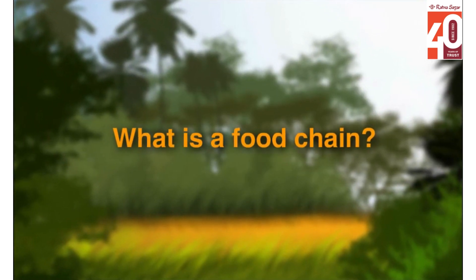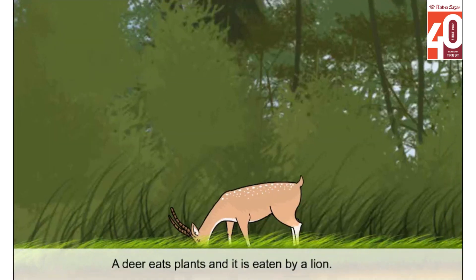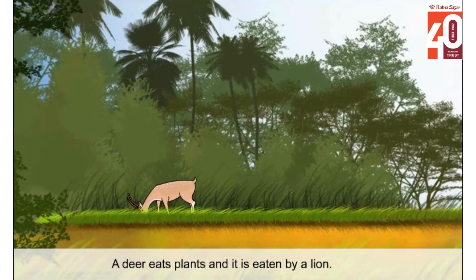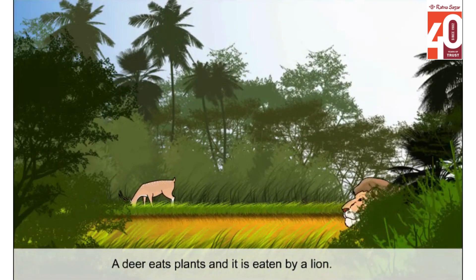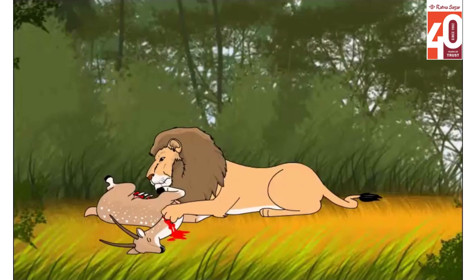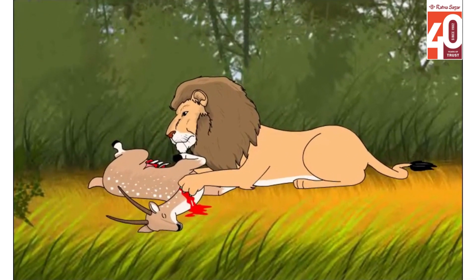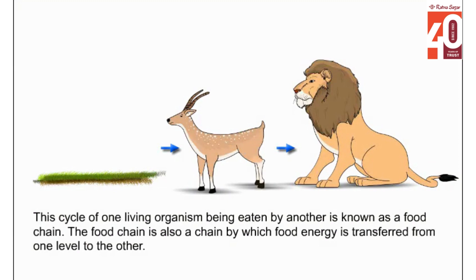Food Chain. What is a food chain? A deer eats plants and it is eaten by a lion. This cycle of one living organism being eaten by another is known as a food chain. The food chain is also a chain by which food energy is transferred from one level to the other.